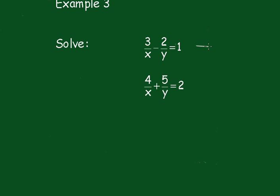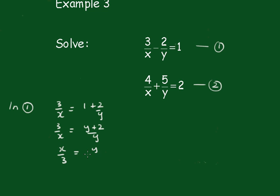Again I'll label this 1, that's 2. So in 1 I'll make x the subject. To do that I'll write 3 on x equals 1 plus 2 on y, so 3 on x equals y plus 2 on y. Turn them both upside down so now we get x on 3 equals y on y plus 2, so x equals 3y on y plus 2.